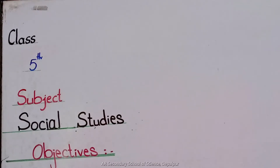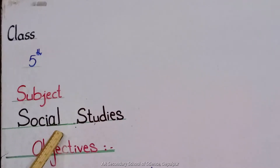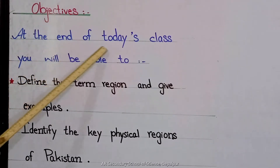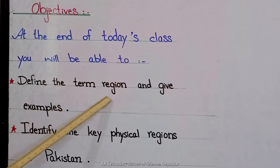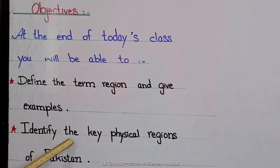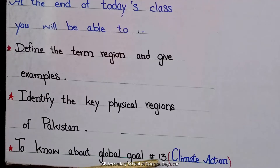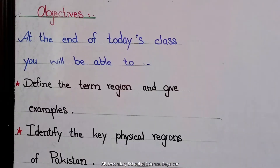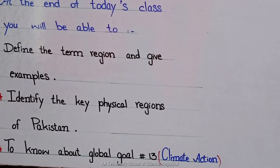Bismillahirrahmanirrahim. Assalamu Alaikum students, hope you are doing well. Today we are going to start our lesson number one of class fifth, subject Social Studies. Our objectives are: at the end of today's class you will be able to define the term region and give examples, identify the key physical regions of Pakistan, and know about Global Goal number 13 - Climate Action.